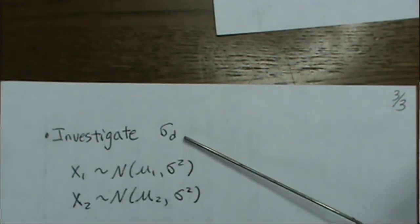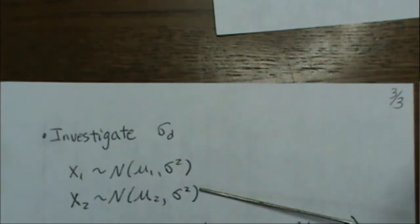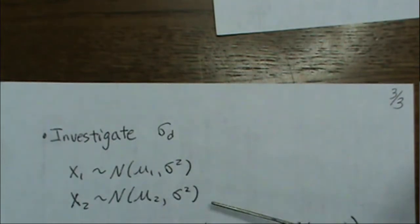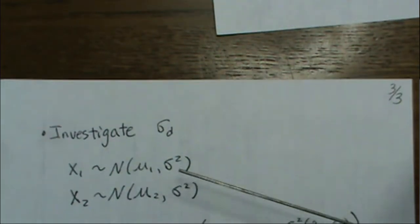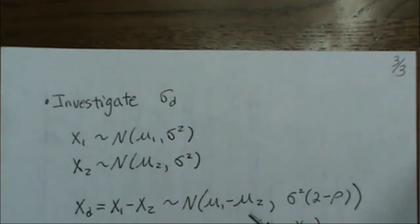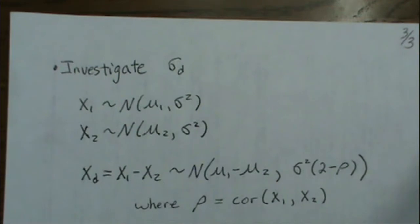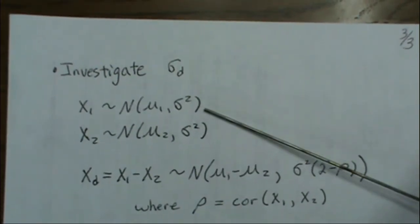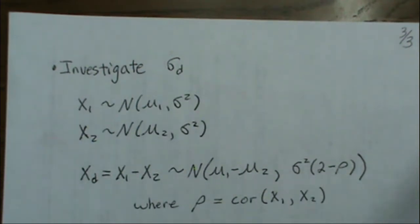One thing to note is that the standard deviation of the differences depends upon the correlation between X1 and X2. This could be pre-treatment and post-treatment where it's the same subject or patient, or we could match on characteristics of different patients. Regardless, there's some correlation between pre- and post-treatment. If this is the setting, the distribution of the differences is normal with the difference of the means, and a variance where rho is the correlation between X1 and X2. If you know only the variance of the pre-population and use that in R, you are going to underestimate the needed sample size.